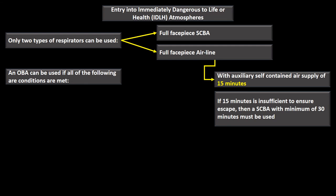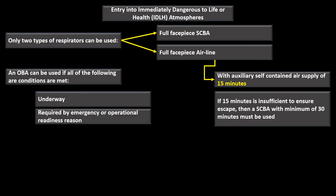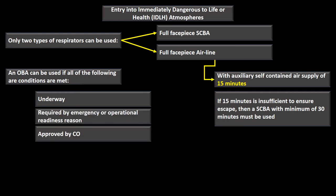An OBA can be used for IDLH entry only if all three conditions are met: the ship is underway, entry is required for emergency or operational readiness reasons, and it is approved by the Commanding Officer. Otherwise, personnel should wait until the ship is in port to use appropriate SCBA or airline equipment.